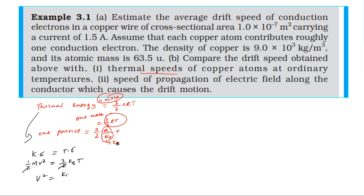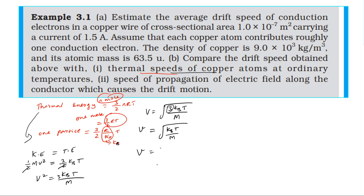Thermal speed v equals square root of 3kT divided by mass. Boltzmann constant k is 1.38 × 10⁻²³. Temperature at room conditions: 27 degrees centigrade equals 300 Kelvin.